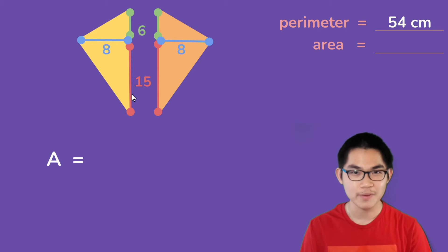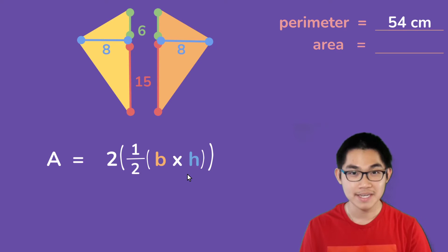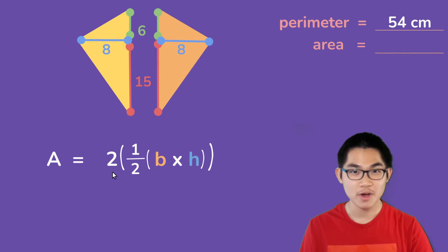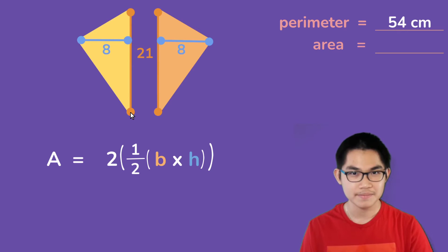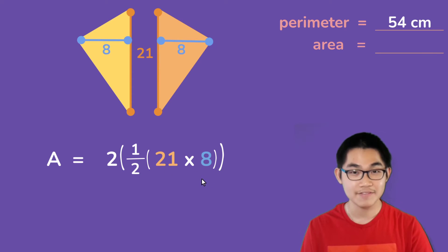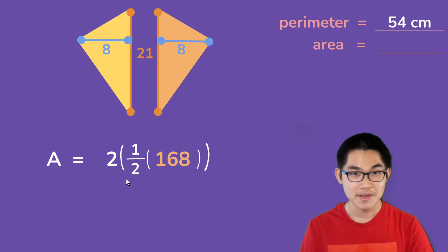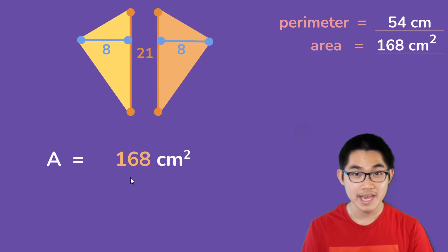The area of a kite is the area of these two triangles added together. The area of a triangle is one half times the base times the height, but since there are two triangles, we multiply by two. The base is 6 plus 15, which is 21, and the height is 8. So 21 times 8 gives you 168. Since 2 times one half equals 1, these cancel out, and the area is 168 centimeters squared.